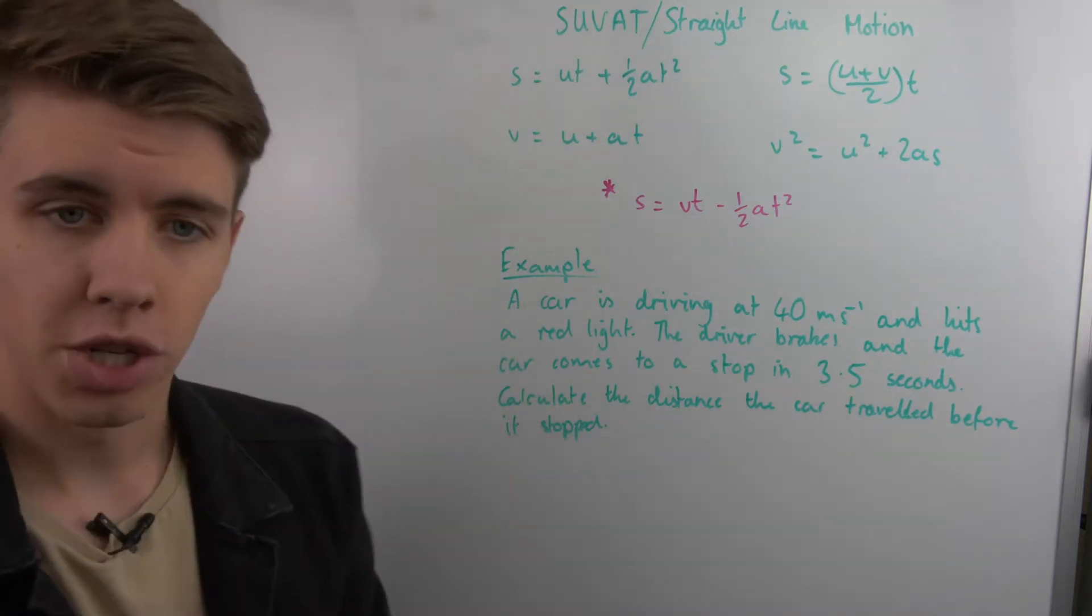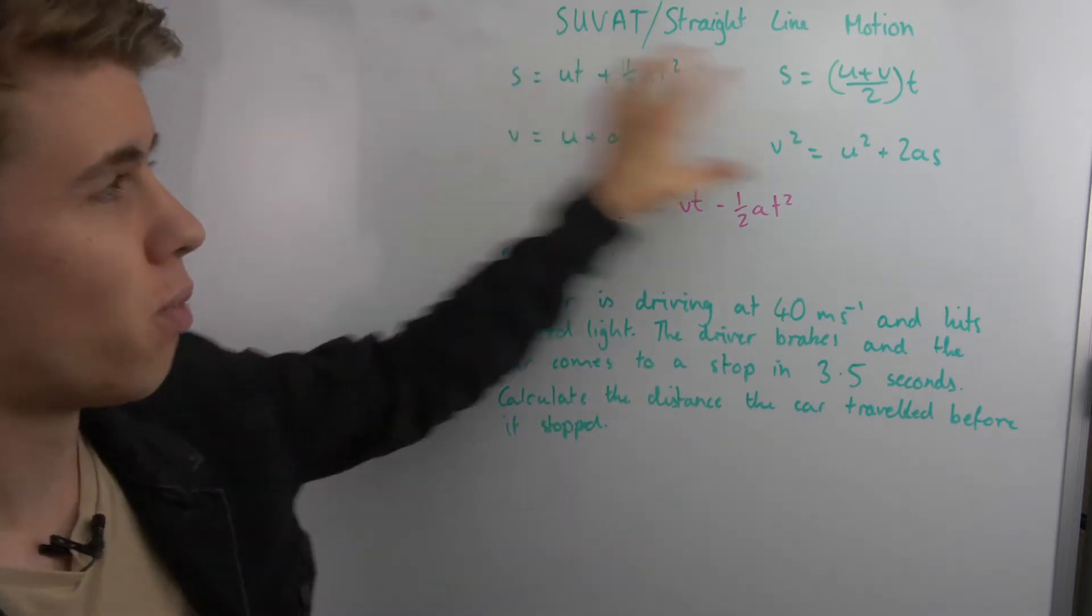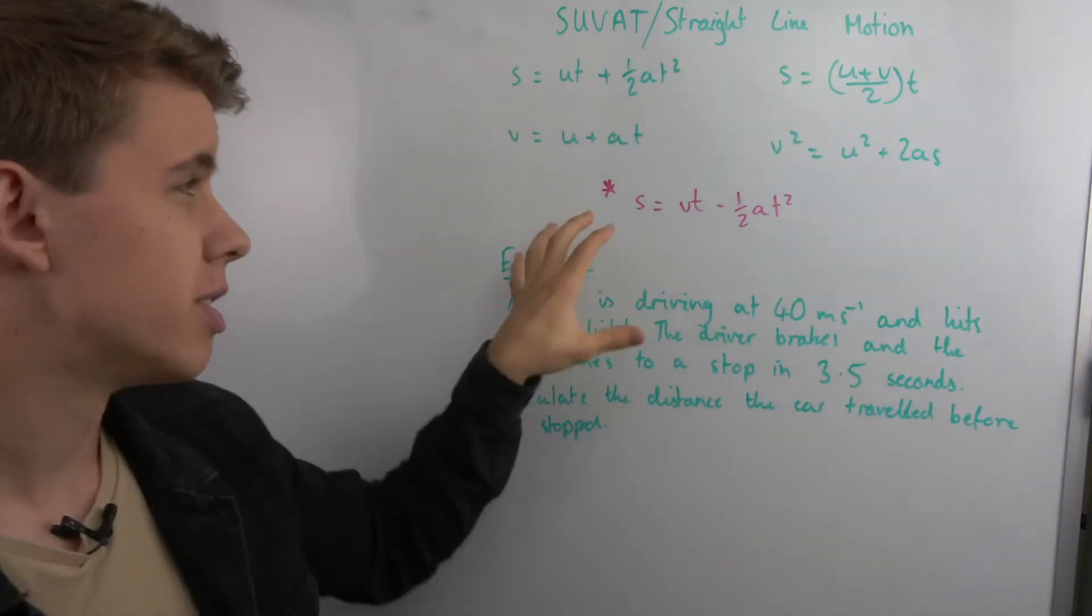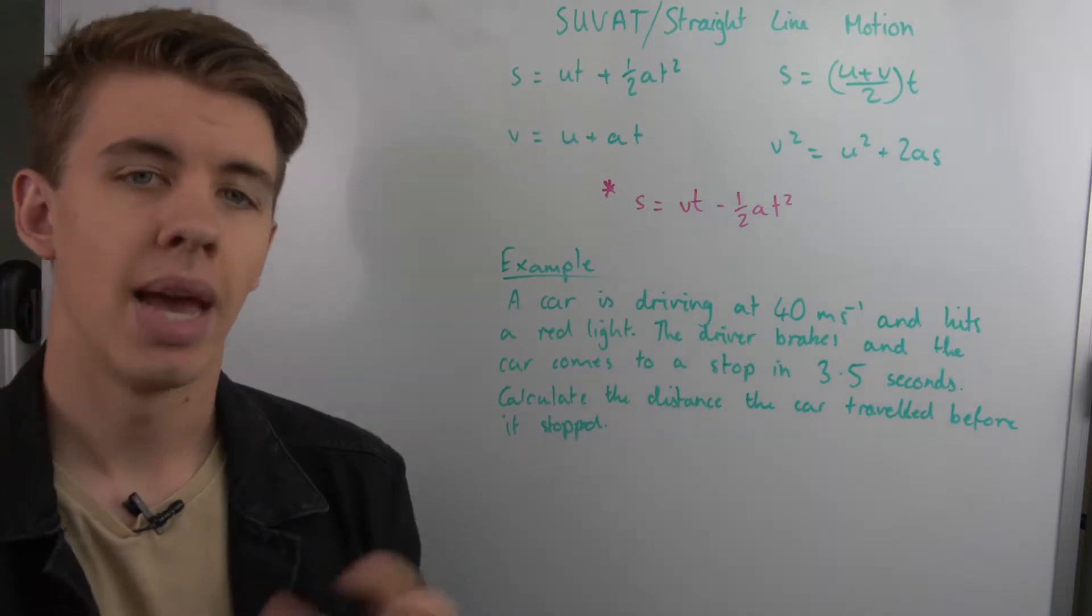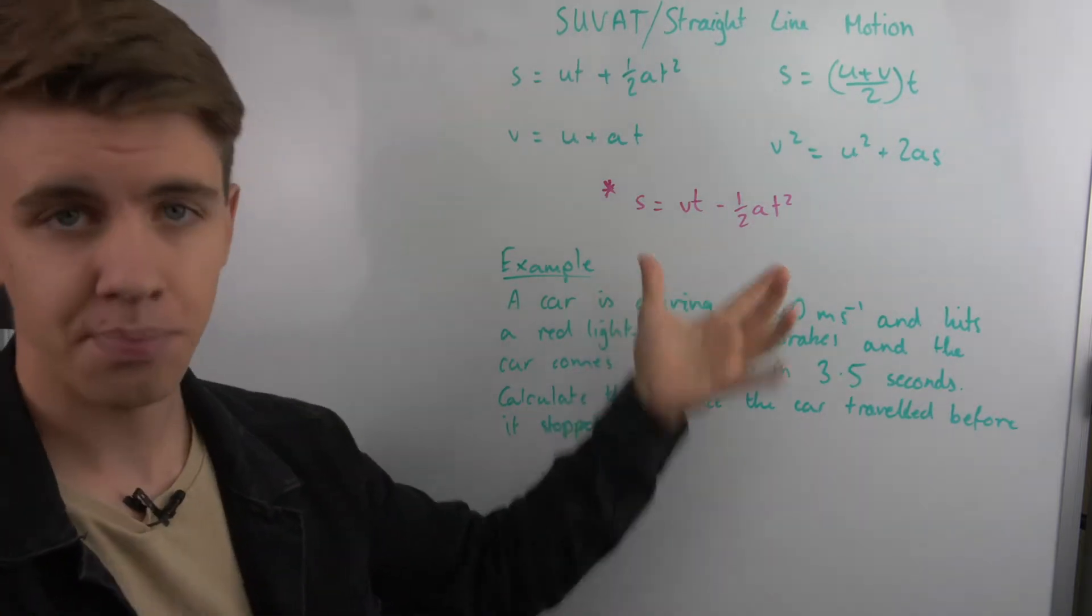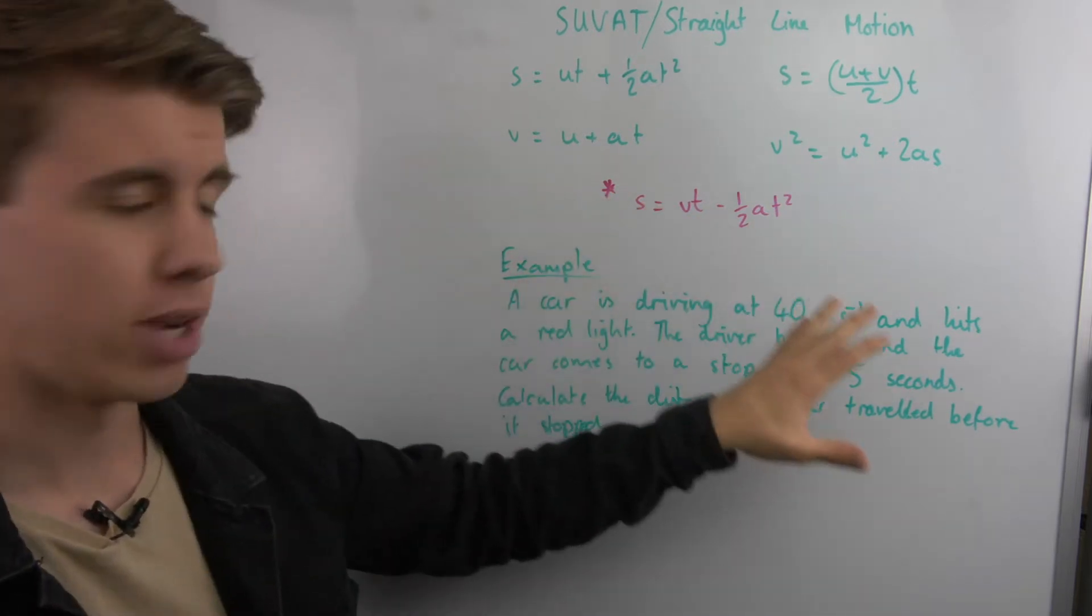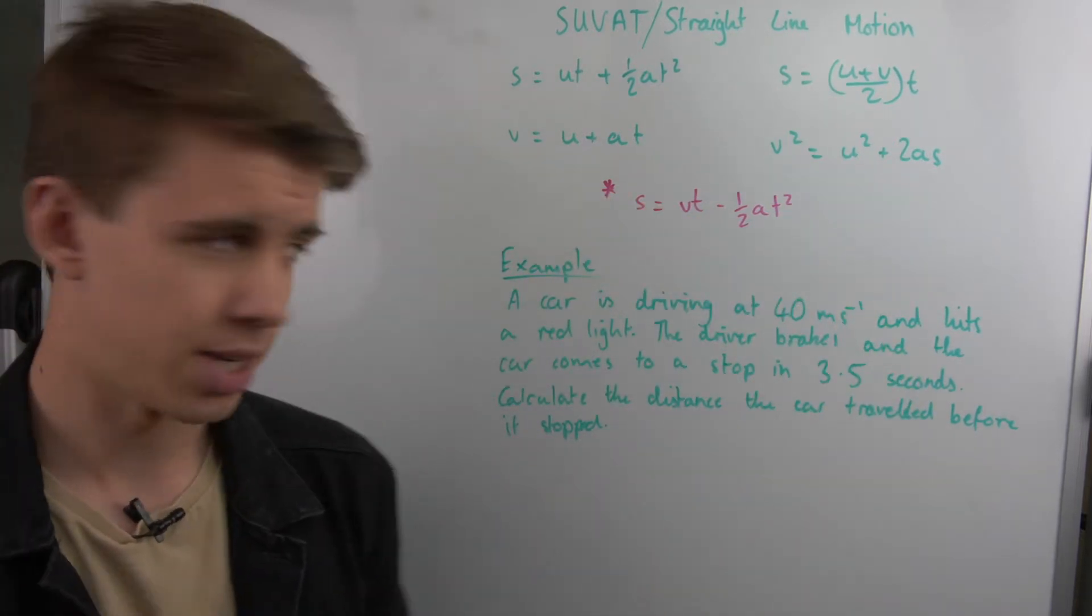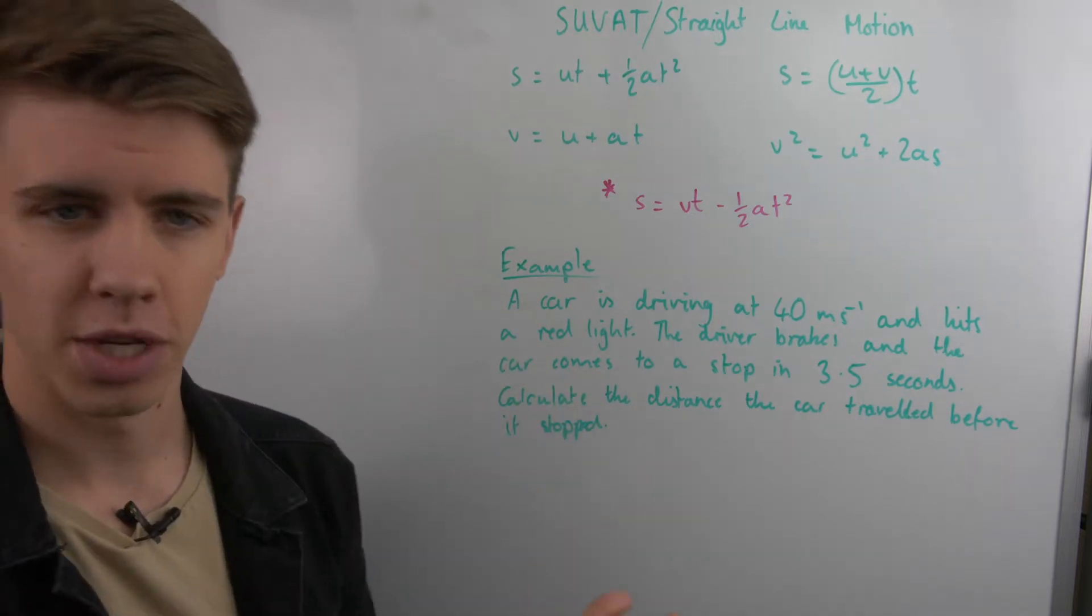In your equation sheet, you only have four of these equations. That's because this fifth equation, you don't need to be tested on. Any of you doing the mechanics module in maths will have to know this at some point. So you don't need to memorize this, but it's just for your understanding of why there are only four, there should be five.